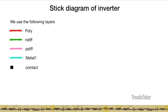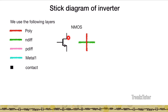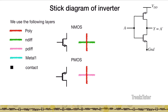To keep it simple, we'll use only the following layers: poly, n-diff (which is used to create NMOS), p-diff (which is used to create PMOS), metal, and contact. In a stick diagram, an NMOS consists of an n-diff intersecting with a poly. When I intersect a poly with a p-diff, I get a PMOS.